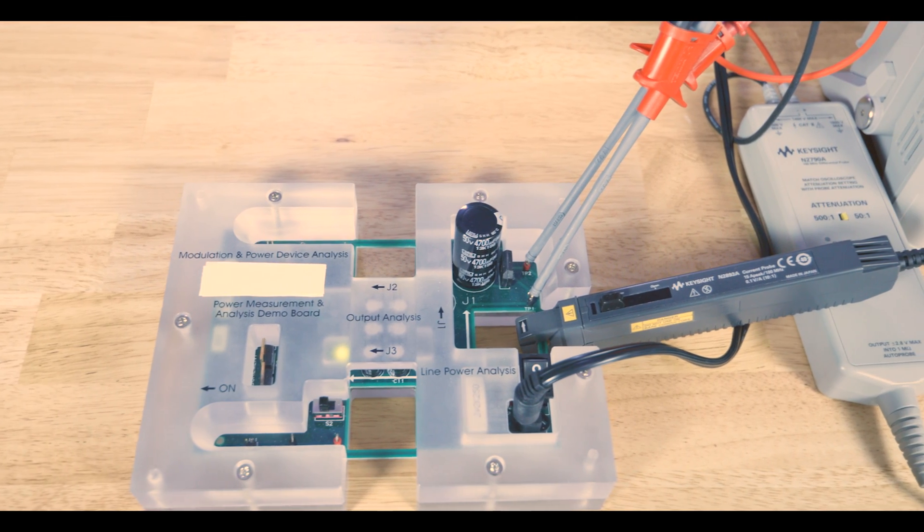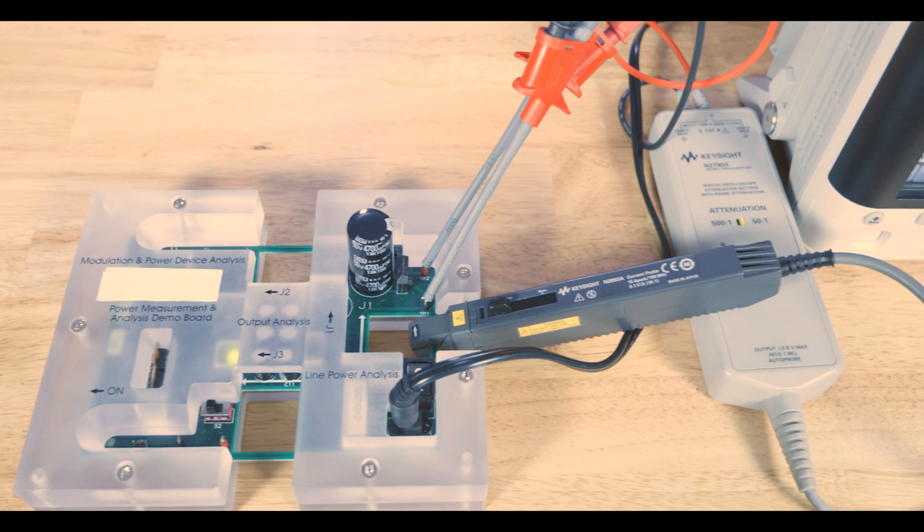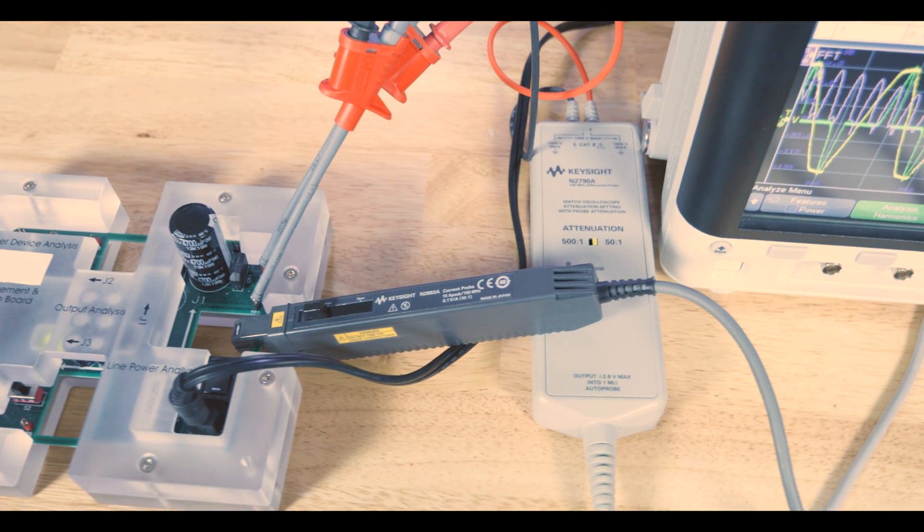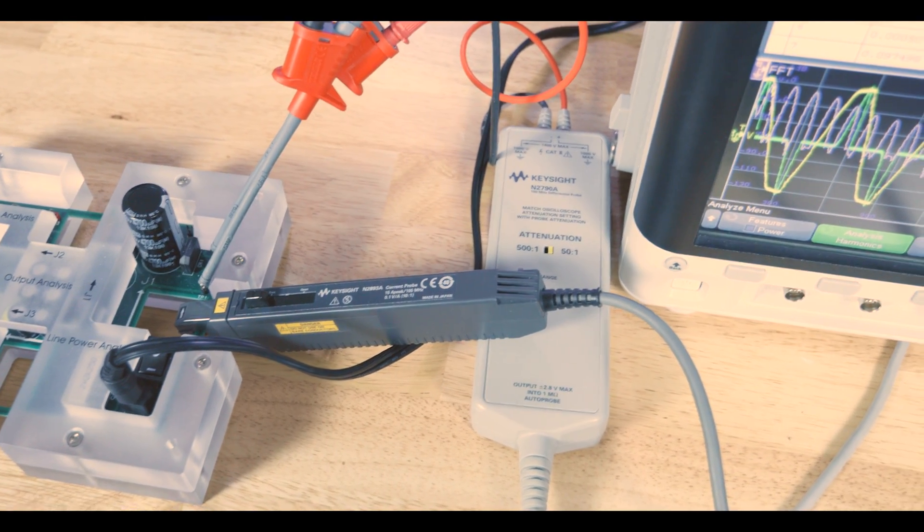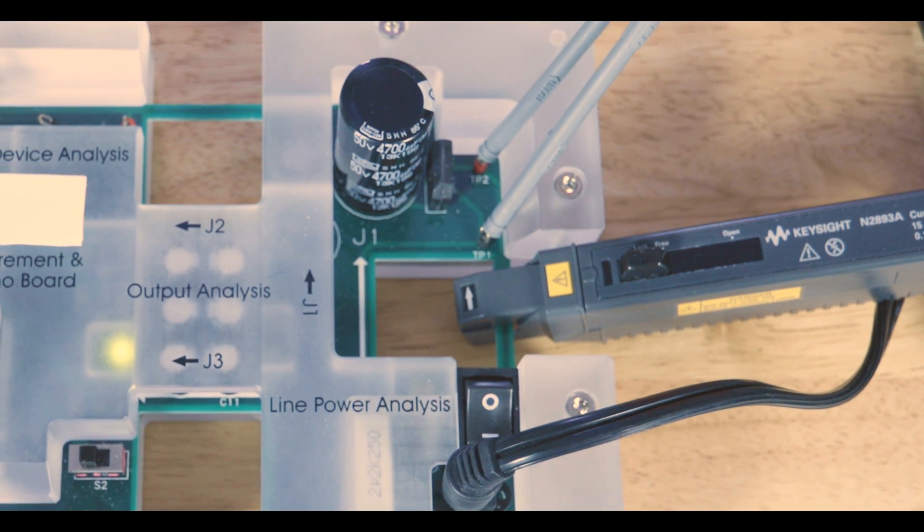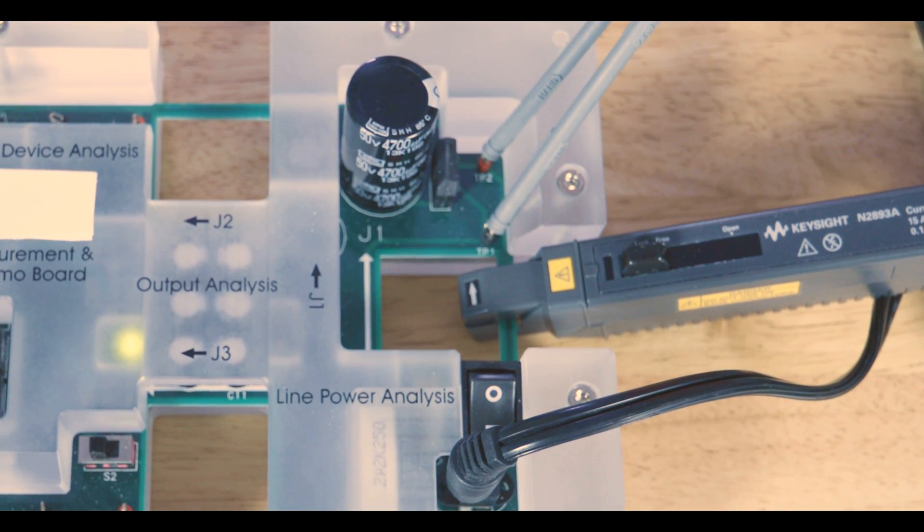I have a differential probe on the input side of my power supply, and I connected that to channel 1. I also have a current probe on the input side of my power supply hooked up in the direction of current flow, and that's on channel 2.